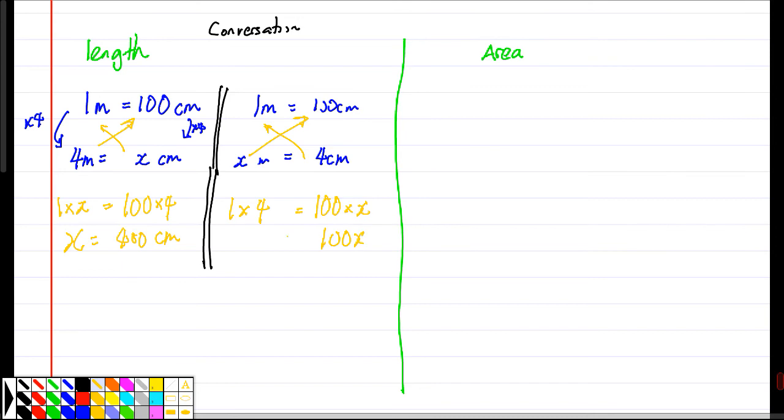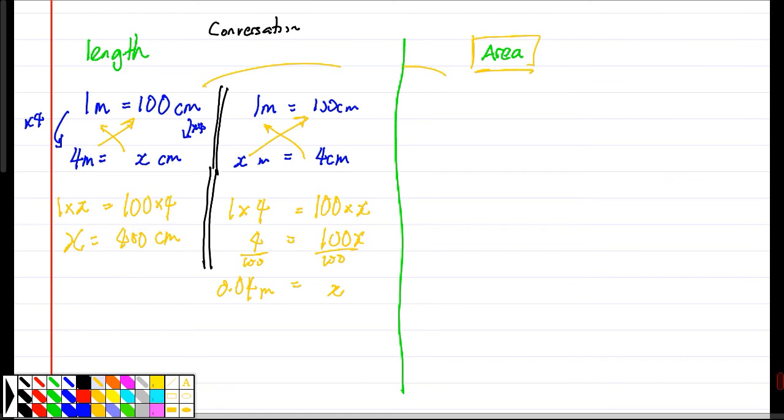To find X, both sides you have 100, right? So you divide by 100. There you go, so you have 0.04 meters. Now what about area?